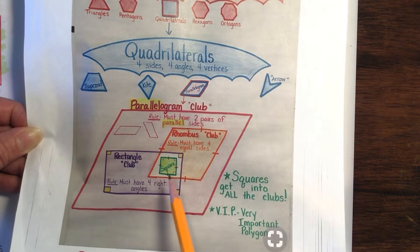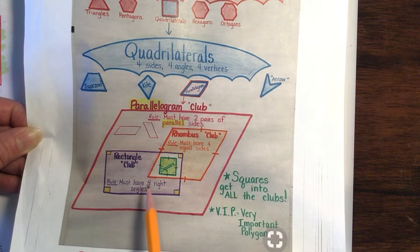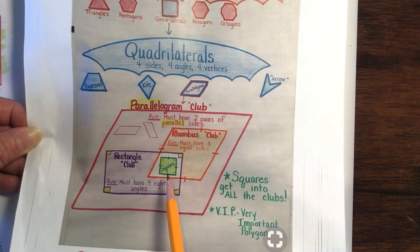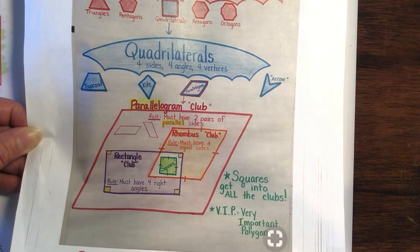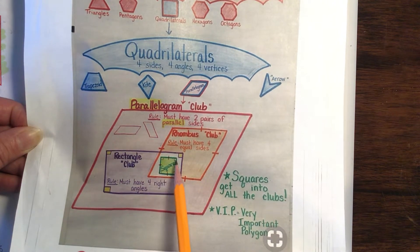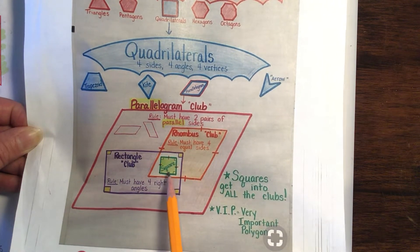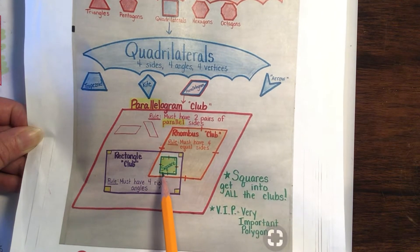The square is just kind of the coolest cat in the whole house. It's a very important polygon because it fits into all of the groups. It can fit into the rectangle club, the rhombus club, and the parallelogram club. The square has four equal sides, two parallel sides, and four right angles.